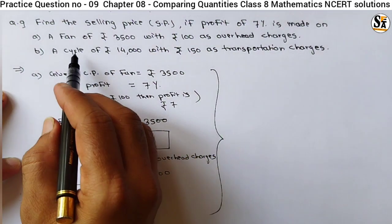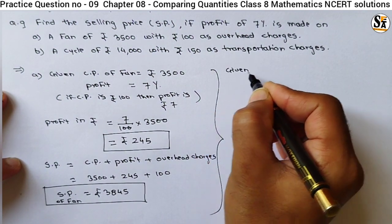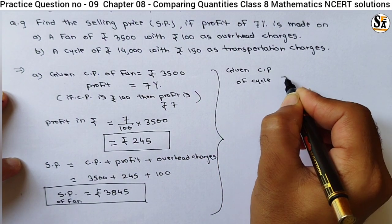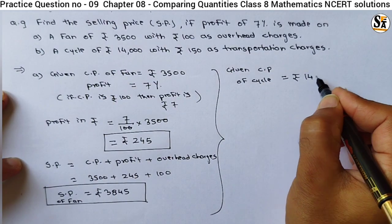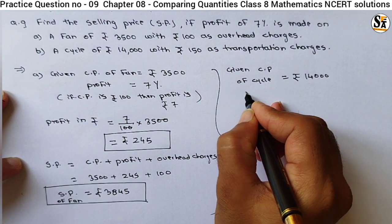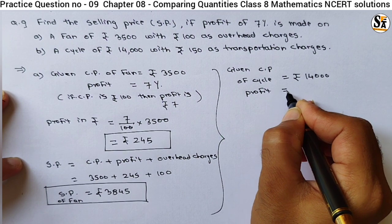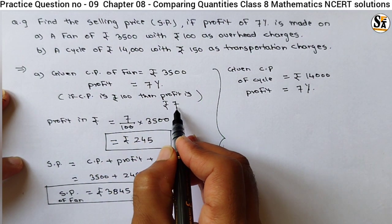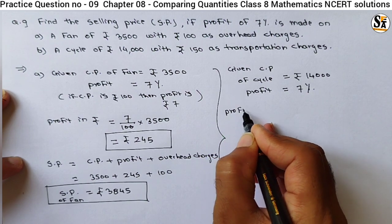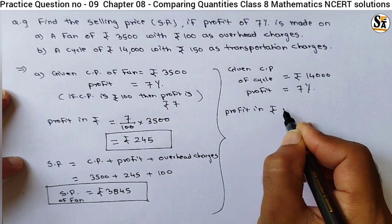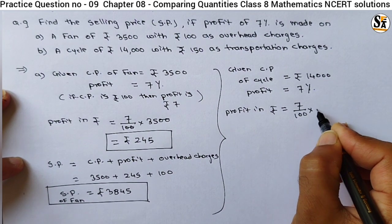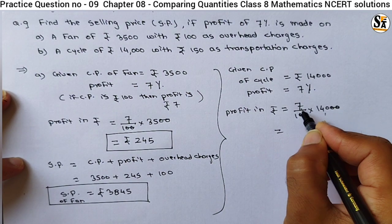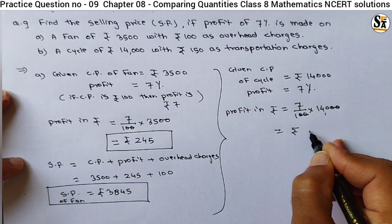Similarly, let's calculate the selling price of the cycle. The cost price of the cycle is equal to rupees 14000. Profit is the same — seven percent. If CP is 100, profit is rupees 7. So profit in rupees equals 7 upon 100 into 14000. The zeros get cancelled: 140 into 7 equals rupees 980.